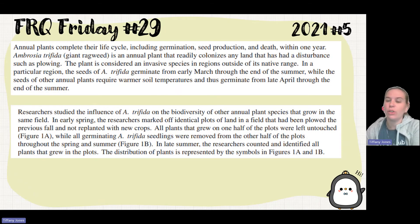Annual plants complete their life cycle including germination, seed production, and death within one year. Ambrosia trifida, Giant Ragweed, is an annual plant that rarely colonizes any land that has had a disturbance such as plowing. The plant is considered an invasive species in regions outside its native range. In a particular region, the seeds of A. trifida germinate from early March through the end of the summer, while the seeds of other annual plants require warmer soil conditions and thus germinate from late April through the end of the summer.